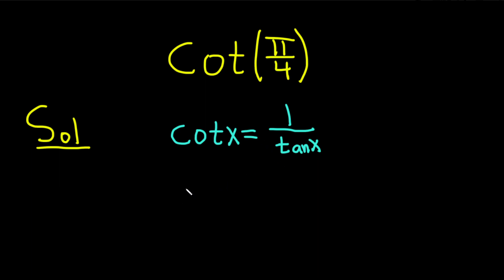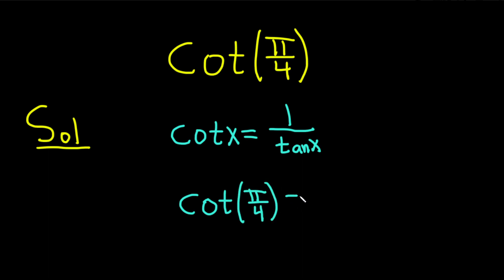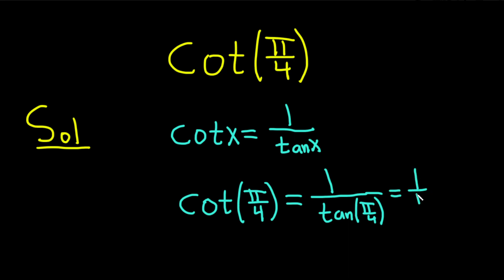We're going to use this one. So now all we have to do is replace the x with pi over 4. This is the cotangent of pi over 4, and that's going to be equal to 1 over the tangent of pi over 4. And the tangent of pi over 4 is just 1, so this is 1 over 1, so we get 1. The answer is just 1.